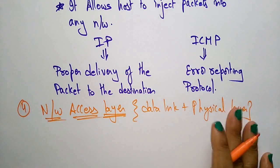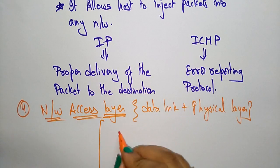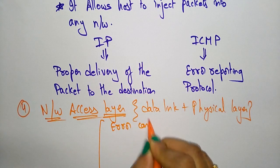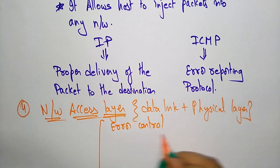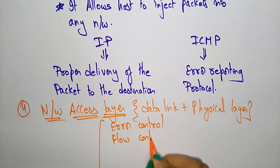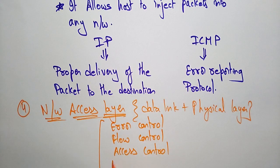The main functions that the data link and physical layer perform are: error control, flow control, access control, and bit conversion. These are the operations that the physical layer and the data link layer carry out.